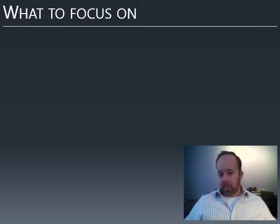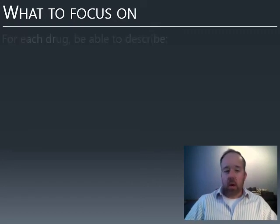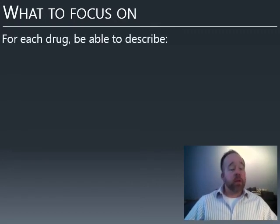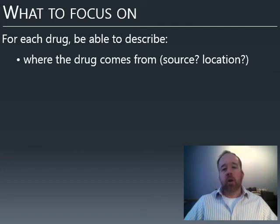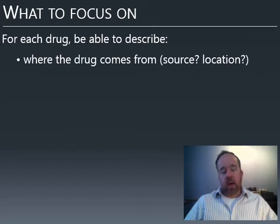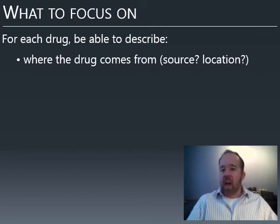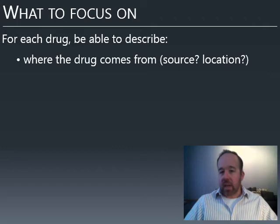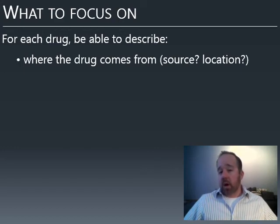What should you focus on? The lectures are the best guide, but for each drug you should be able to describe a variety of characteristics. Where did the drug come from? This means both the source — for marijuana, the psychoactive ingredient THC comes from the cannabis plant — and also the geographic origin. Cannabis first came from Central Asia and India. So there's both the plant source and the location.